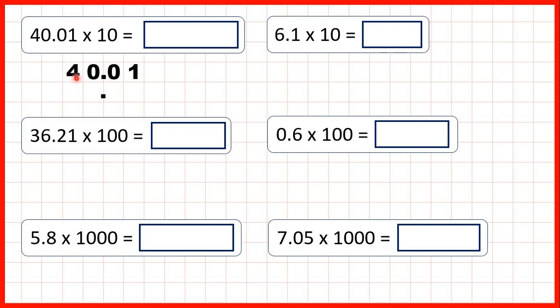So we can copy this 4 down 1 square to the left and do the same with all of our other digits. That gives us 400.1 as our answer.